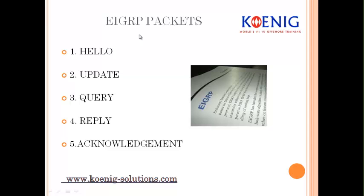EIGRP uses five different packet types: hello, update, query, reply, and acknowledgement. Hello is used to establish the neighbor relationship. If two routers in the EIGRP world want to become neighbors, they send hello messages and respond if they match the same criteria — same autonomous system, same K-values, and same authentication. That's what hello is used for.